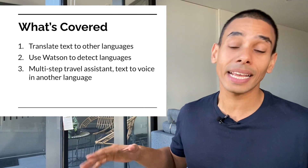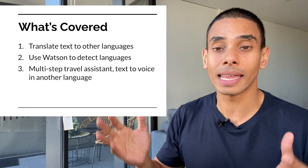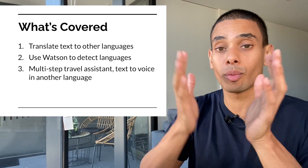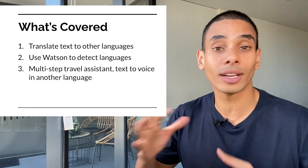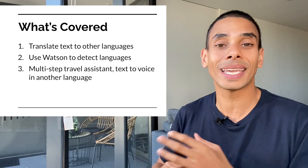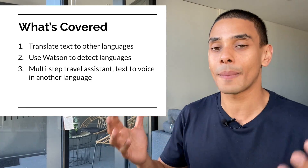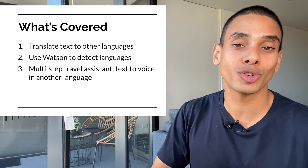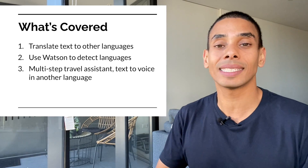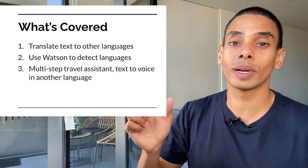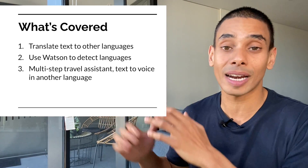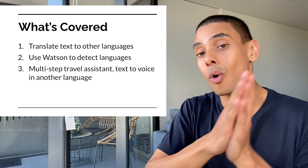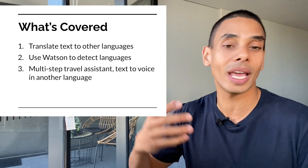We're going to be covering everything you need to get up and started to translate languages. Specifically, we're going to be taking a look at how we can translate text from one language to another, as well as how to use different language models. We'll also look at how we can identify different languages from a piece of text. And last but not least, we're going to be building an AI-powered travel assistant, so we'll be able to take text from one language, convert it to another, and then generate the speech for that as well — speaking in English and converting all the way through to generating speech in a different language.